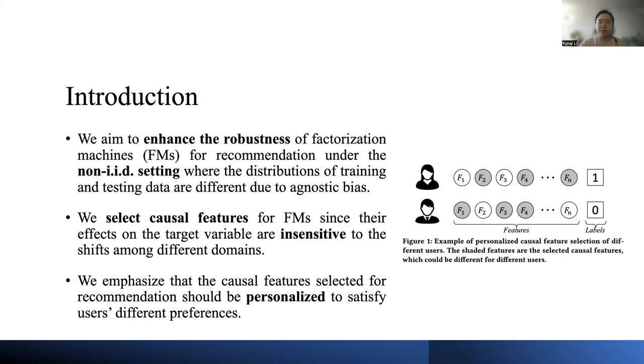In this work, we aim to enhance the robustness of factorization machines for recommendation under the non-IID setting. Here, the non-IID setting means the distributions of training and testing data are different due to some agnostic bias.